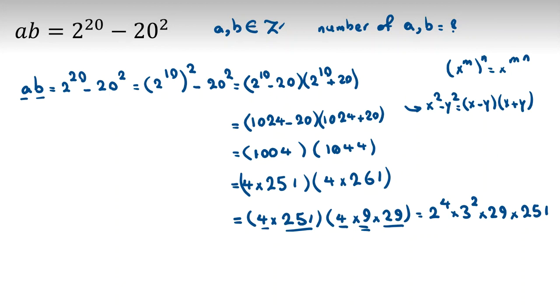A times B. If you consider A is what, then B will be determined. A is plus minus 2 to the X times 3 to the Y. It's similar to finding the number of divisors. 29 to the Z times 251 to the W.